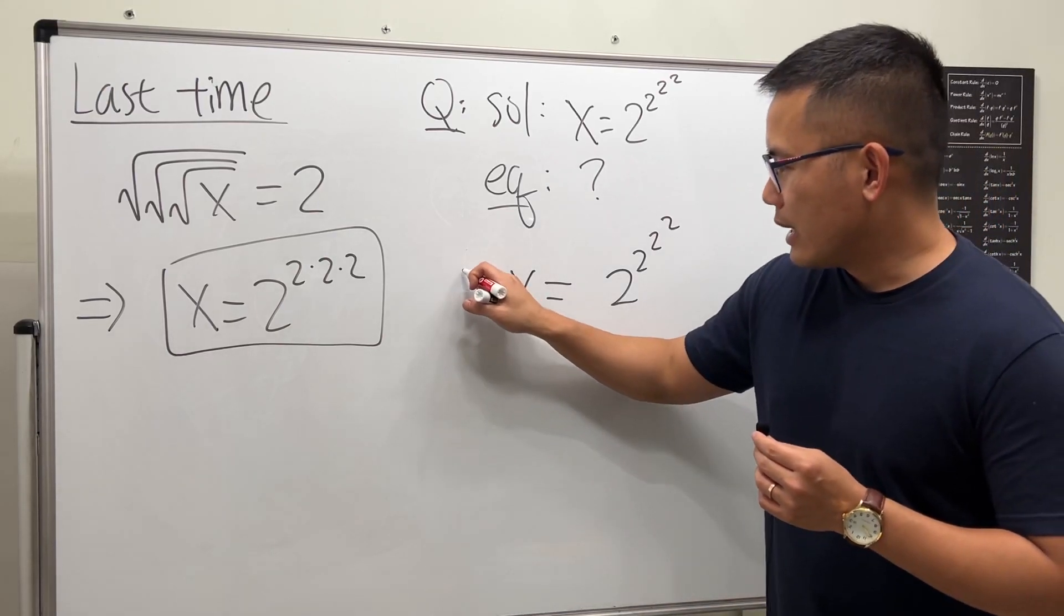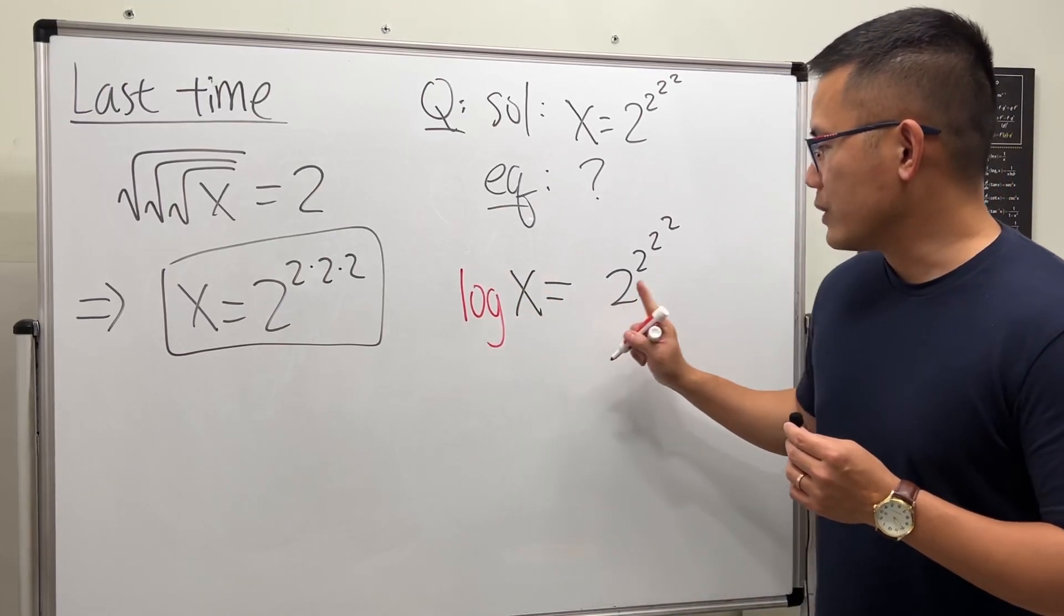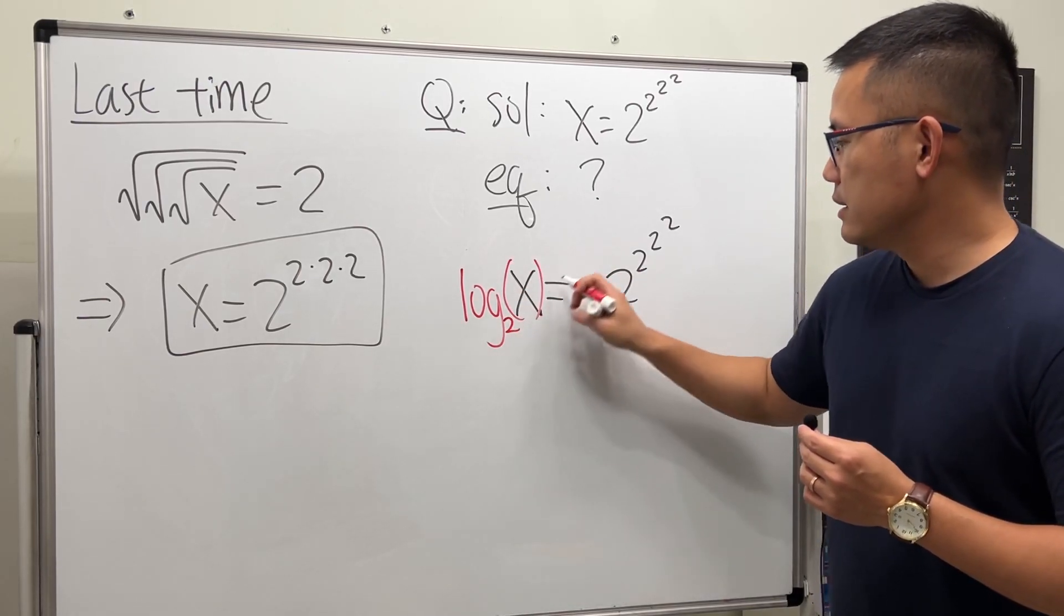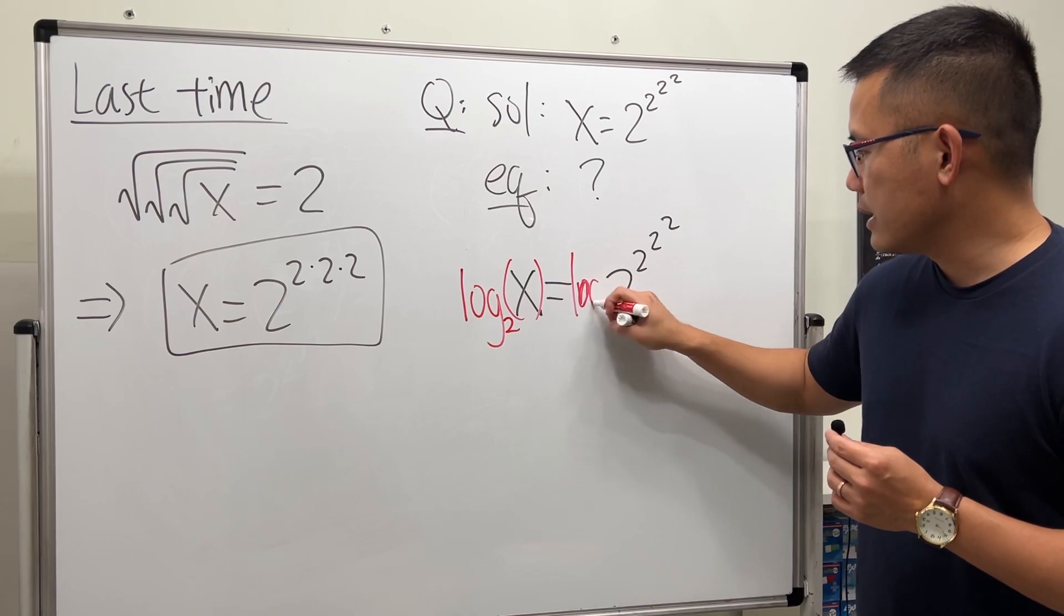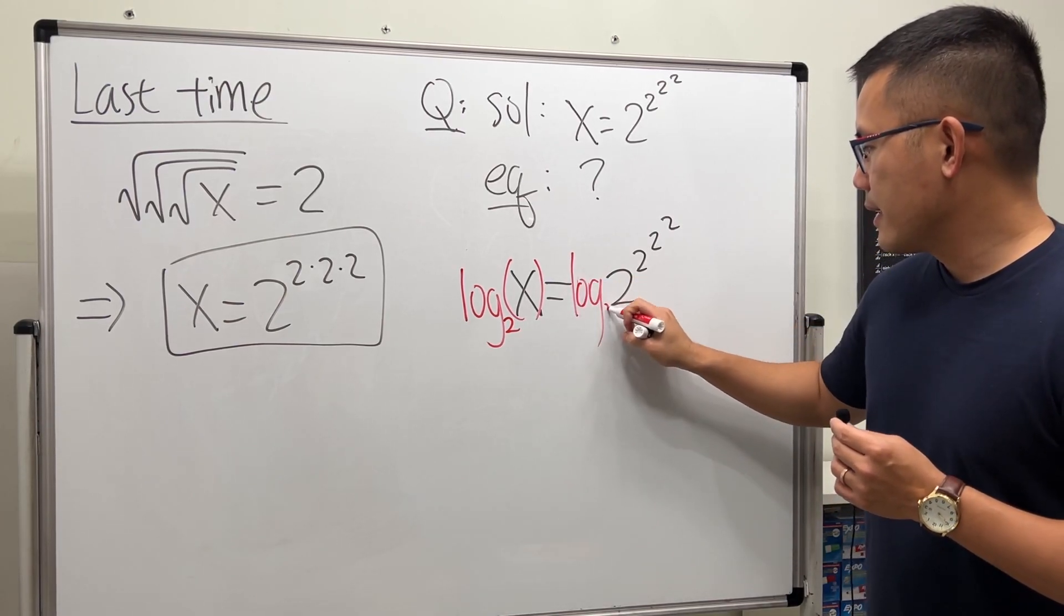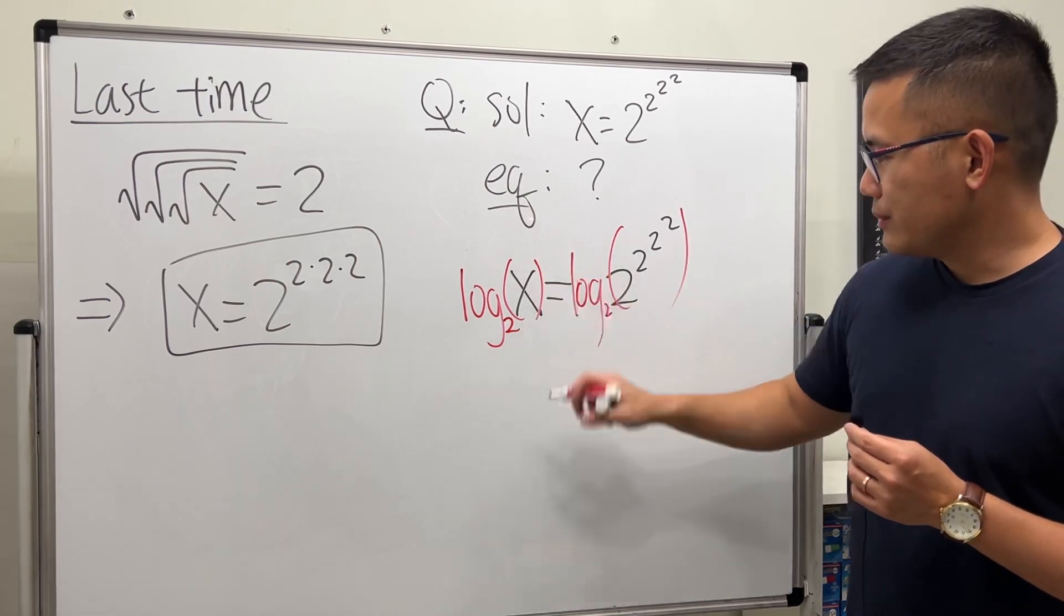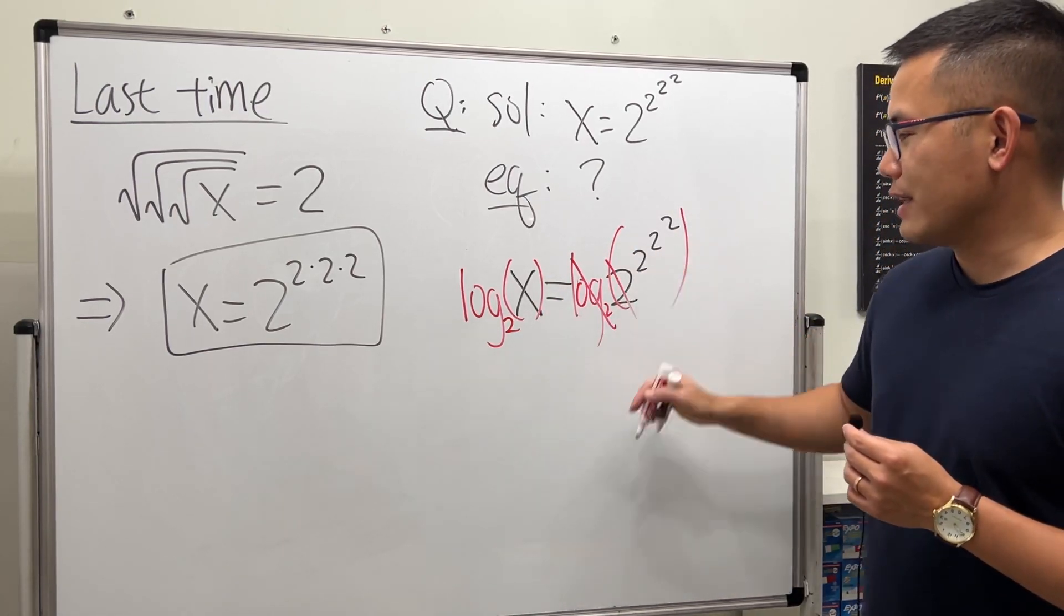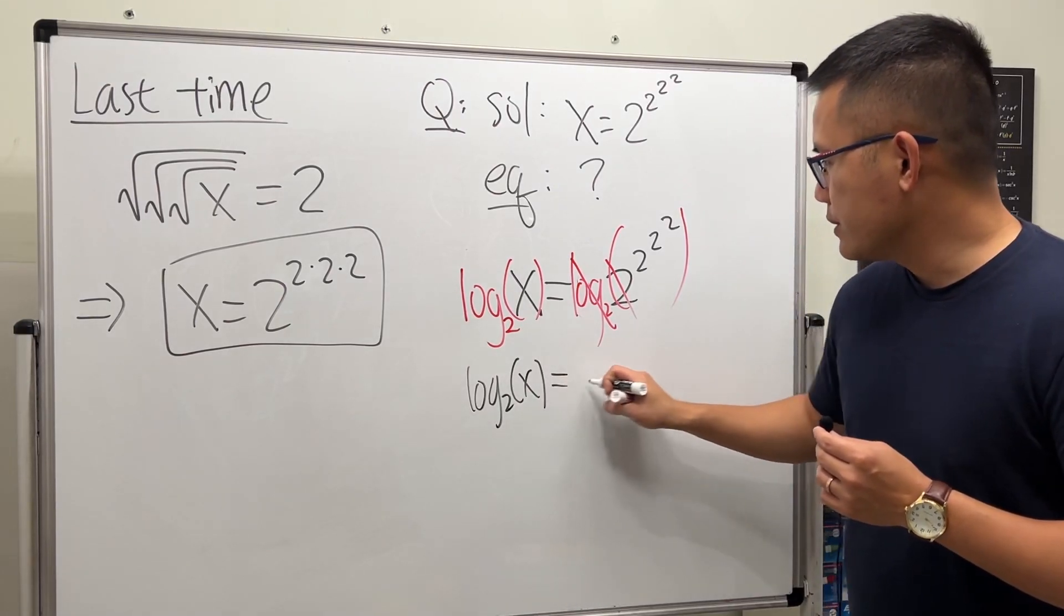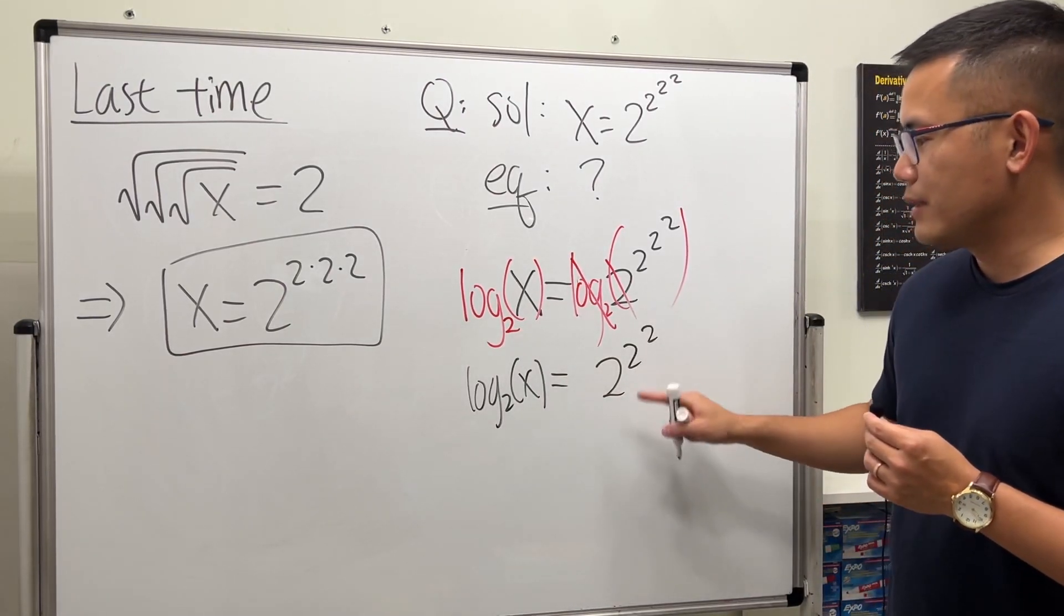So I will take the log with this base. We are going to get rid of that first. So we take log base 2 like this, and we do so on both sides. So this and that cancel, and you just have that. So we have log base 2 of x equals 2 to 2, like this.